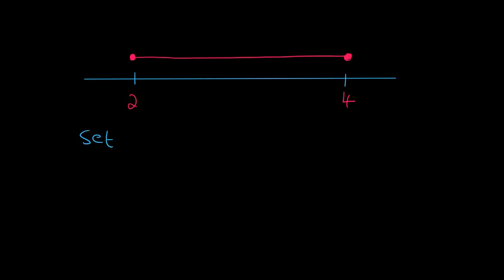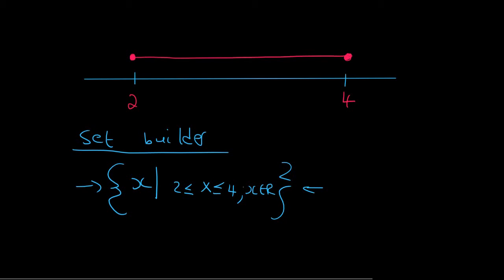In set builder we have the funny brackets. Then we're going to say that x must be anything bigger than 2 but we can include the 2, and it must be smaller than 4 and we can include the 4. We then use a semicolon and we say that x is an element of R. So we've got three parts.